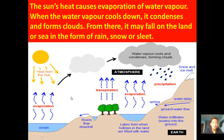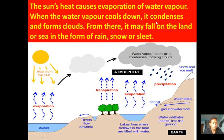These water vapors are carried by air and go up into the sky. When they reach a certain height in the atmosphere, the water vapor cools down and condensation takes place. Condensation means when water vapor turns into water droplets.